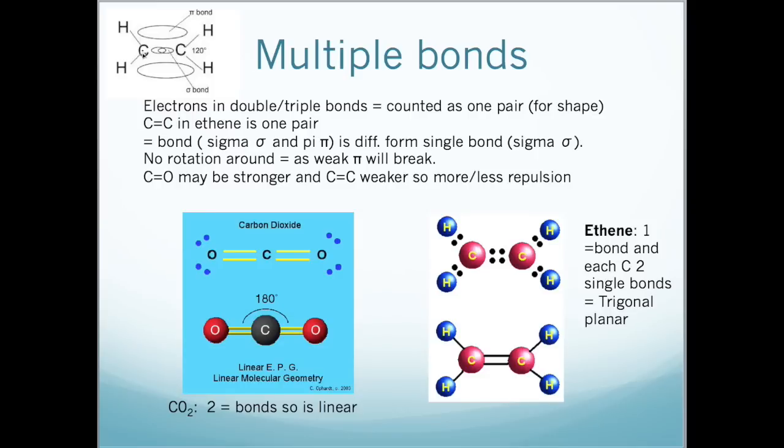The sigma bond is in the middle and the pi bond is above, and this doesn't allow rotation about the double bond. If it does rotate that means that the pi bonds will break, whereas in a single bond there is only a sigma bond without the pi bonds, meaning that it can rotate. The carbon-oxygen double bond may be stronger or weaker than the corresponding single bond. This means that there might be slightly more or less repulsion.